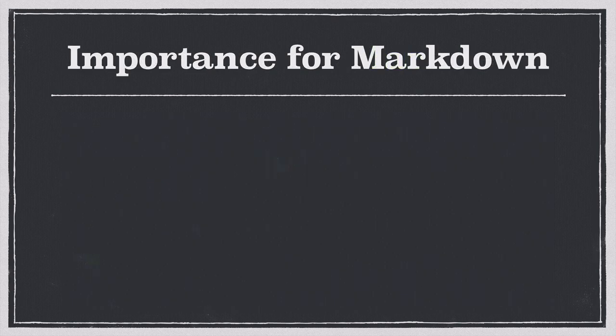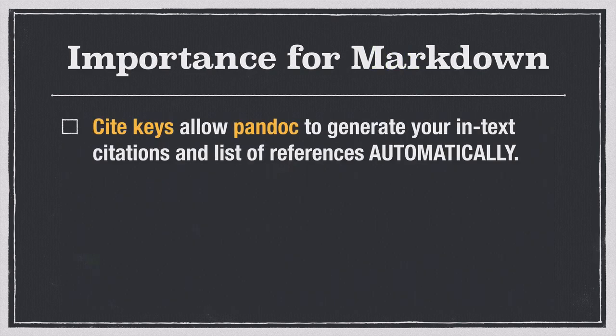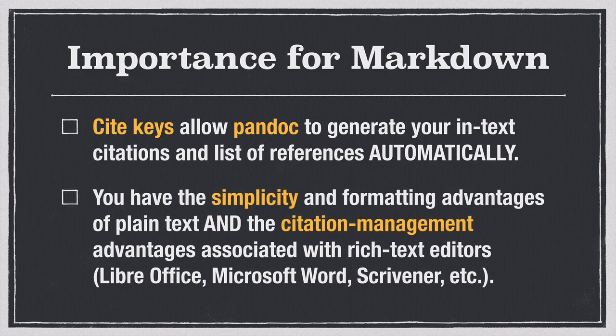So what's the importance of bib files for Markdown? First of all: cite keys. Cite keys are the unique identifiers for each item. They allow Pandoc — the program that converts your plain text documents into Word, PDF, HTML, et cetera — to generate your in-text citations and list of references automatically. What that means is you have the simplicity and formatting advantages of plain text, and at the same time, you have the citation management advantages we associate with rich text editors like LibreOffice, Microsoft Word, and Scrivener. So you really get the best of both worlds.